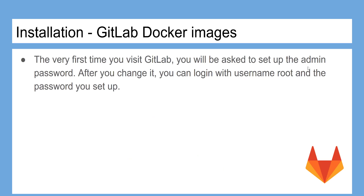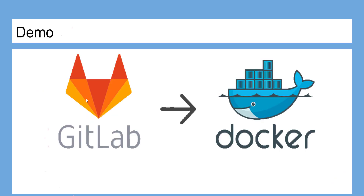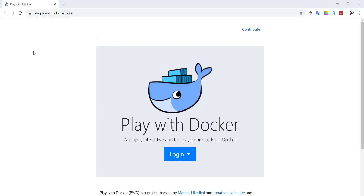The very first time you visit GitLab, you will be asked to set up the admin password. After you change it, you can log in with username 'root' and the password you set up. Now let's see how to install GitLab using Docker.